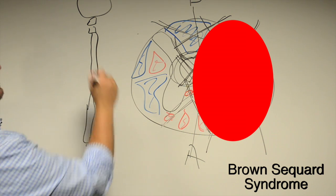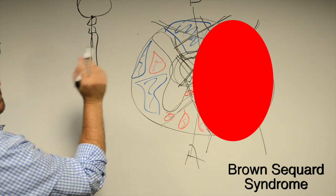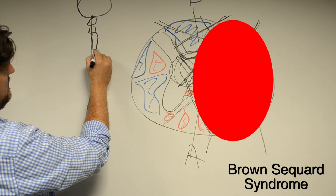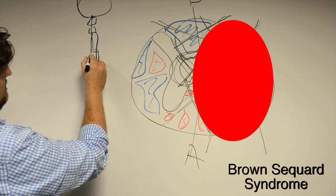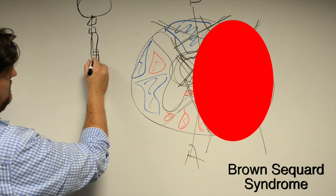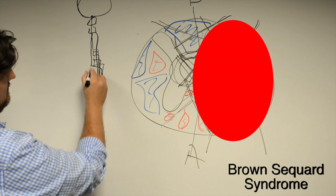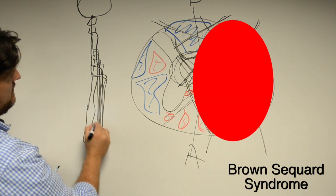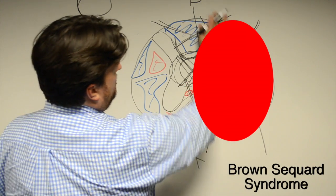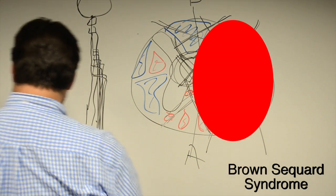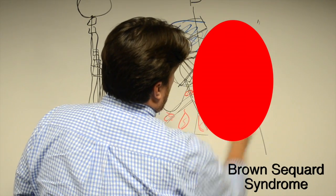Spinothalamic tract comes down through the brain at the red nucleus, straight down, and at each level, essentially, it will cross over and continue down. And this happens two segments below each nerve root. So what you'll see in an injury like this is if you were to obliterate one complete side of your spinal cord. Let's just clear this up.